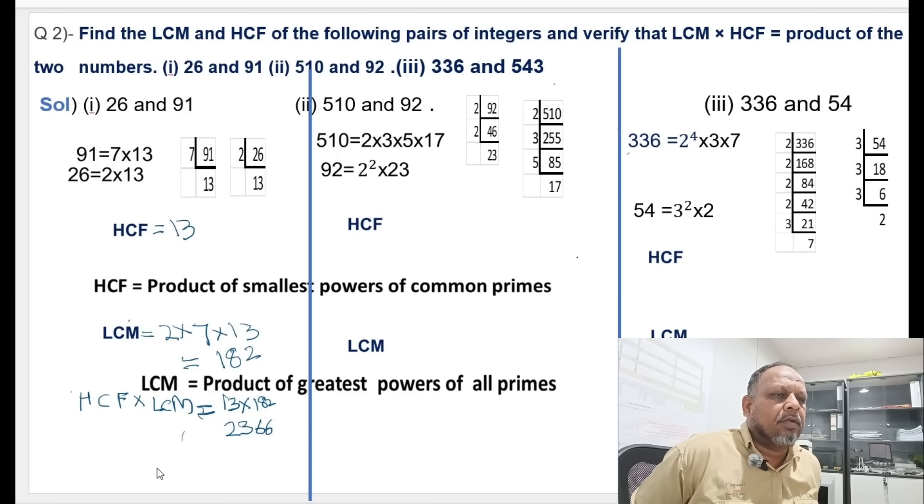If you multiply 26 and 91 you get the same answer. So it is verified that LCM multiplied by HCF equals the product of the two numbers.